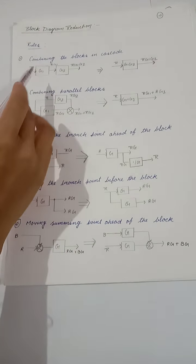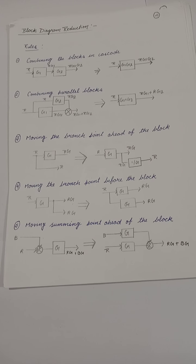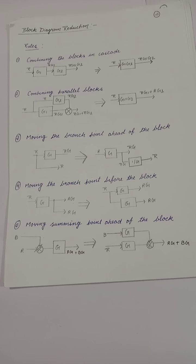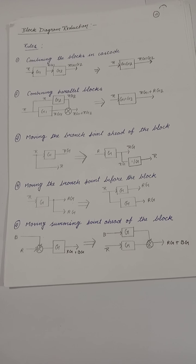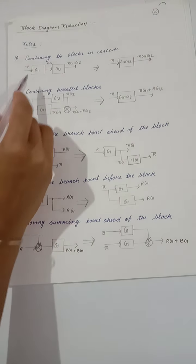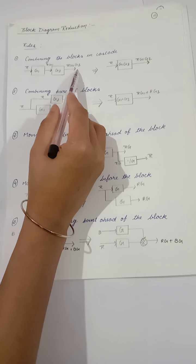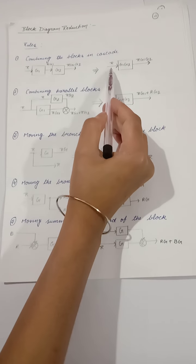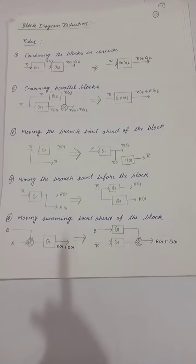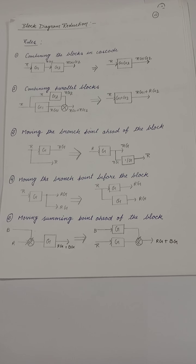This is the first rule: combining blocks in cascade. You can multiply the gain of each block as a single gain. Our intention is to get the same output. Here we have the input R and the output R·G1·G2.